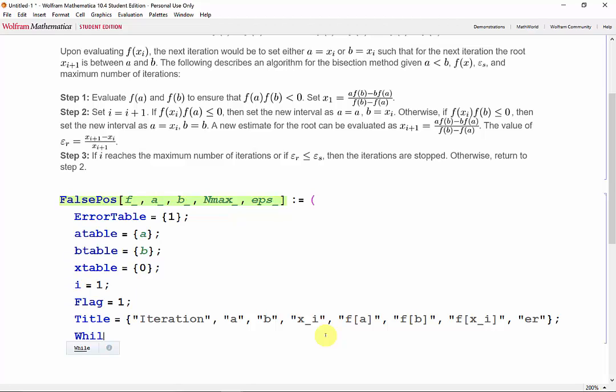And now we'll move on to our while loop, which keeps going so long that i is less than or equal to nmax and flag is equal to 1.